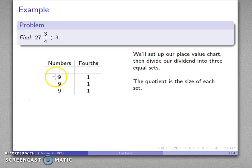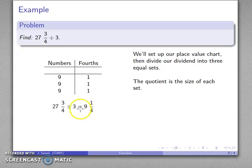Each of these three sets has nine and one fourth, so the amount is going to be expressed as nine and a quarter as my quotient.